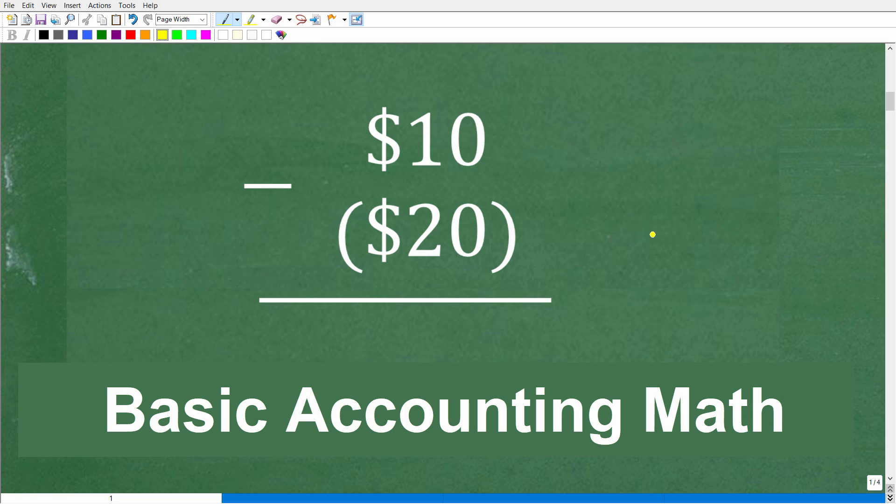We can't solve this problem unless we understand what these parentheses mean right here. So we have $10 minus $20 in parentheses. So what does this mean?